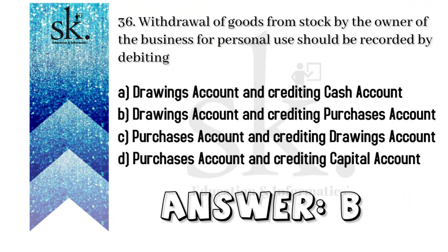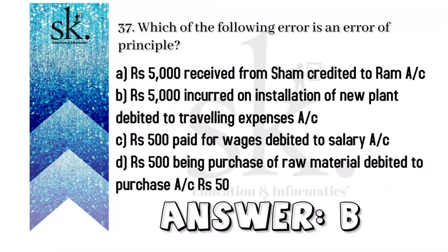The next question: withdrawal of goods from stock by the owner of the business for personal use should be recorded by debiting — this is termed as drawings. Drawings account has to be debited and since the proprietor has taken stock out, you can reduce it from purchases, so purchases will be credited. The answer will be D — drawings account debited and purchases credited.